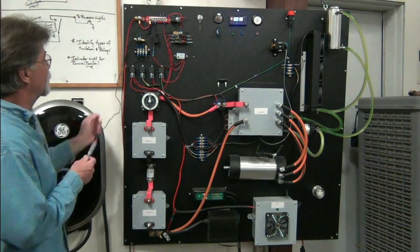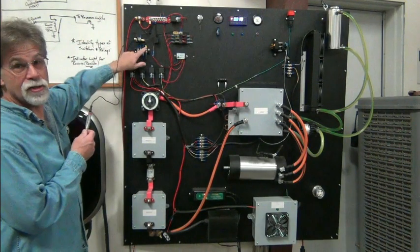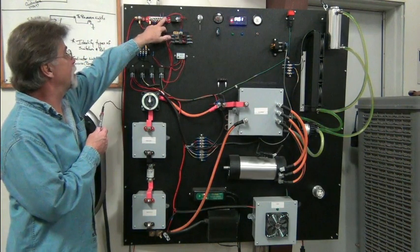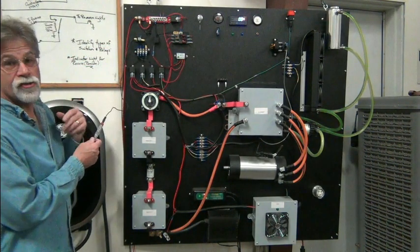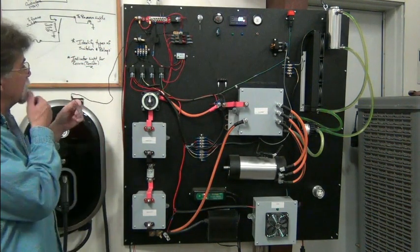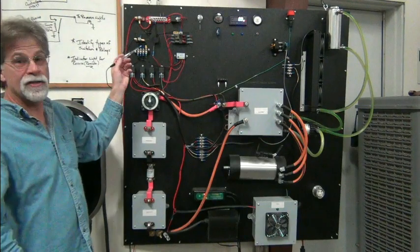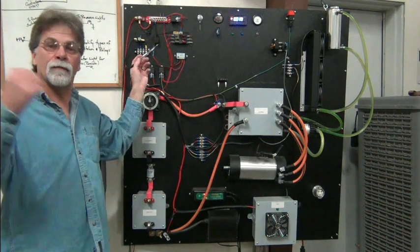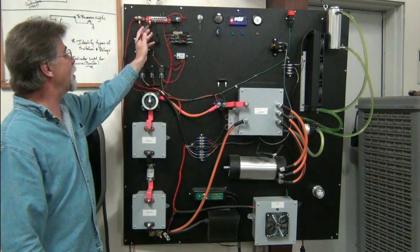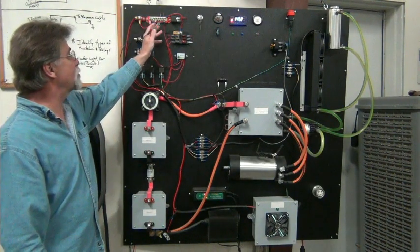And so this terminal strip here is just a bunch of negatives and this is a bunch of unswitched 12 volt. And I think I mentioned that to you before, we have switched and unswitched 12 volts. This just comes from my battery over here to this terminal switch, so these are all unswitched 12 volts.